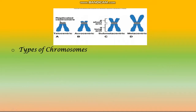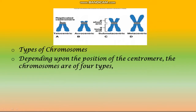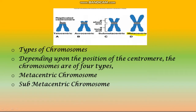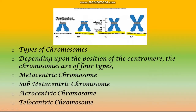Types of chromosomes: depending upon the position of centromere, the chromosomes are of four types — metacentric, submetacentric, acrocentric, and telocentric.